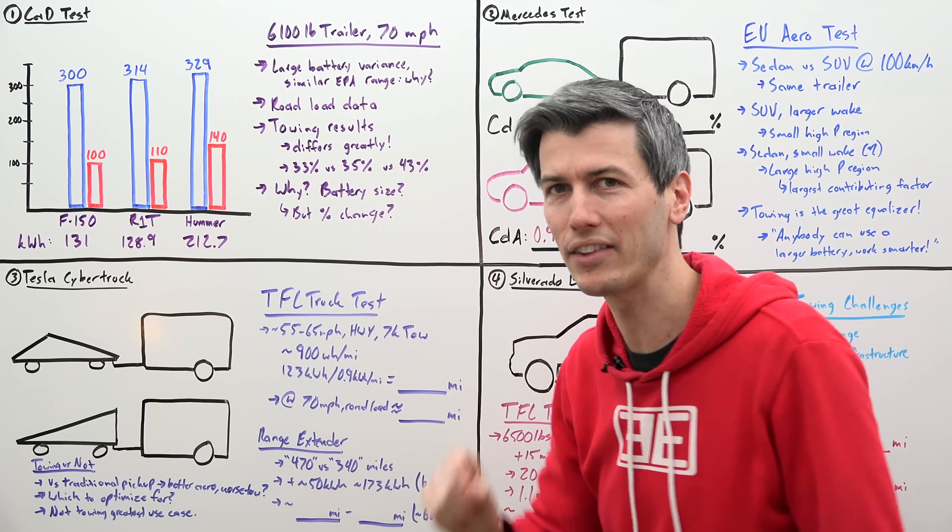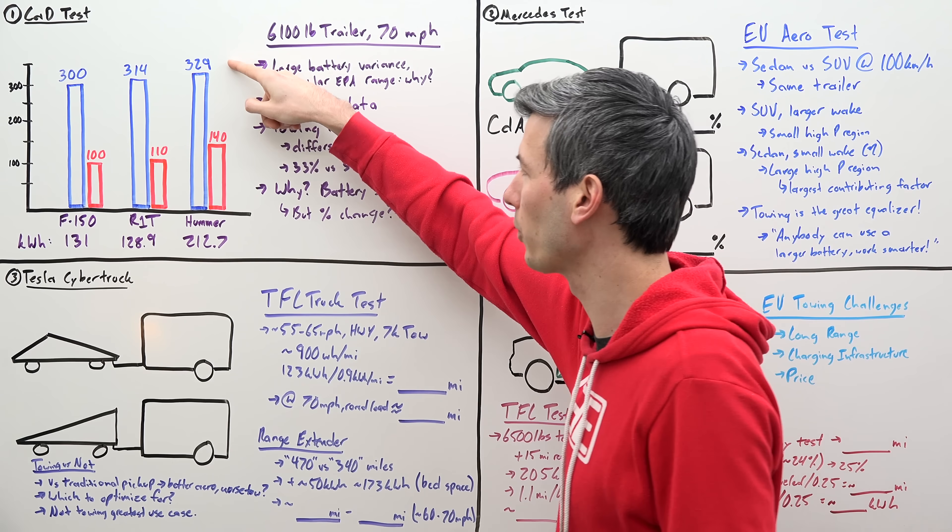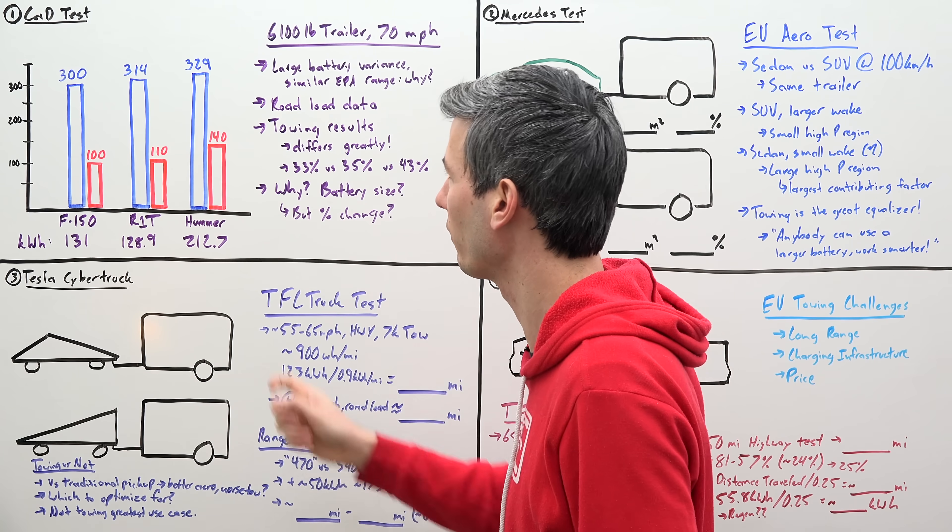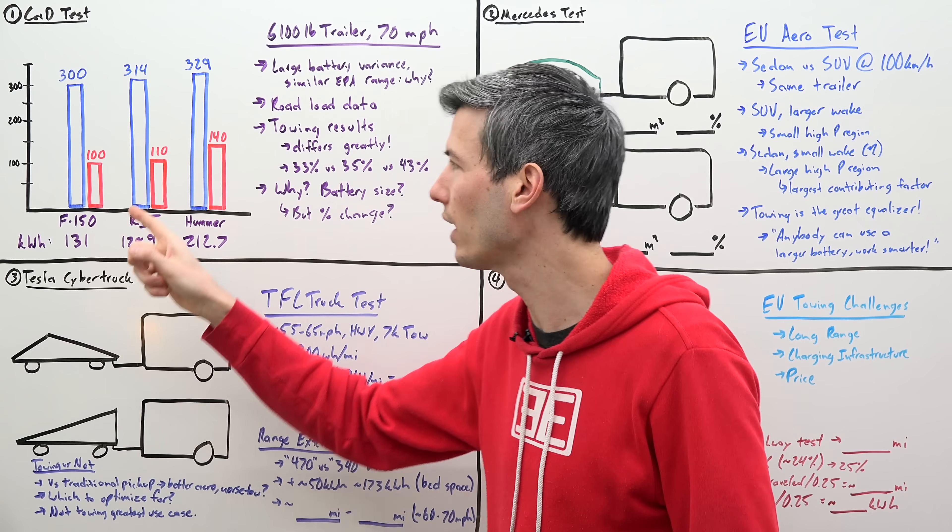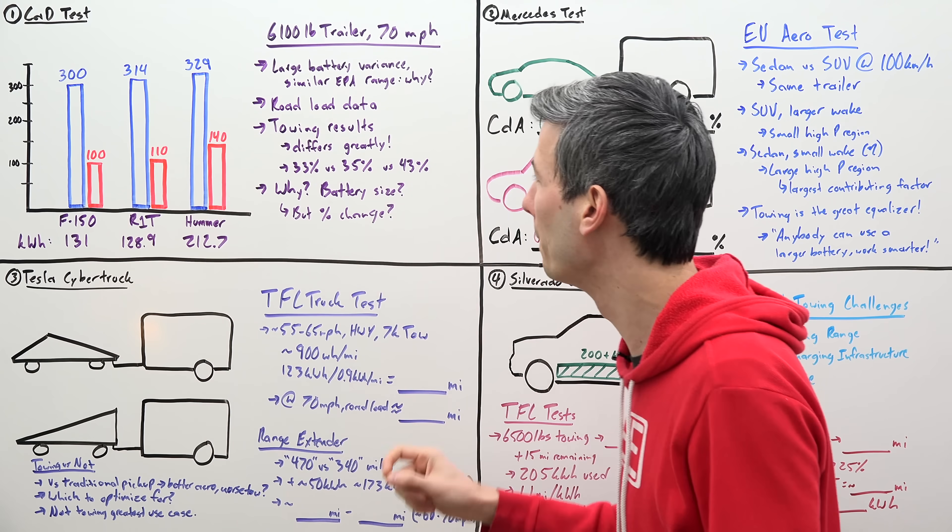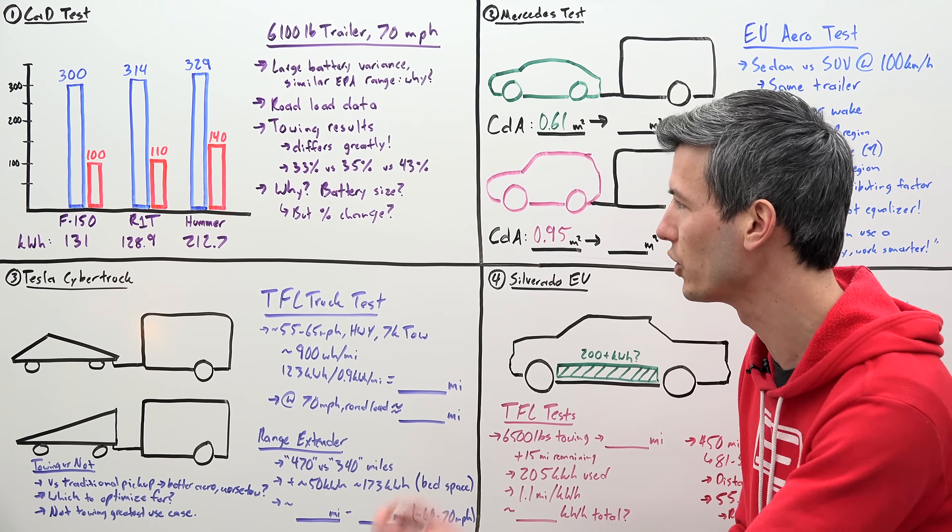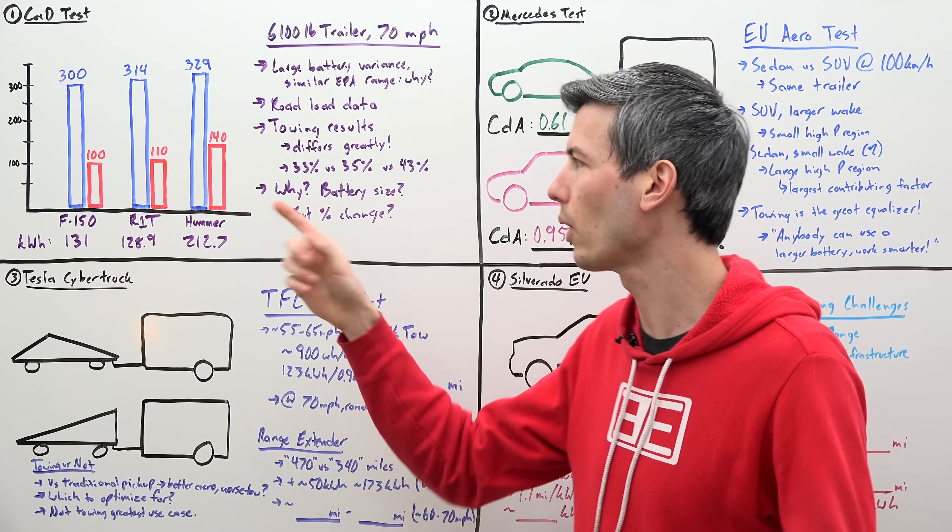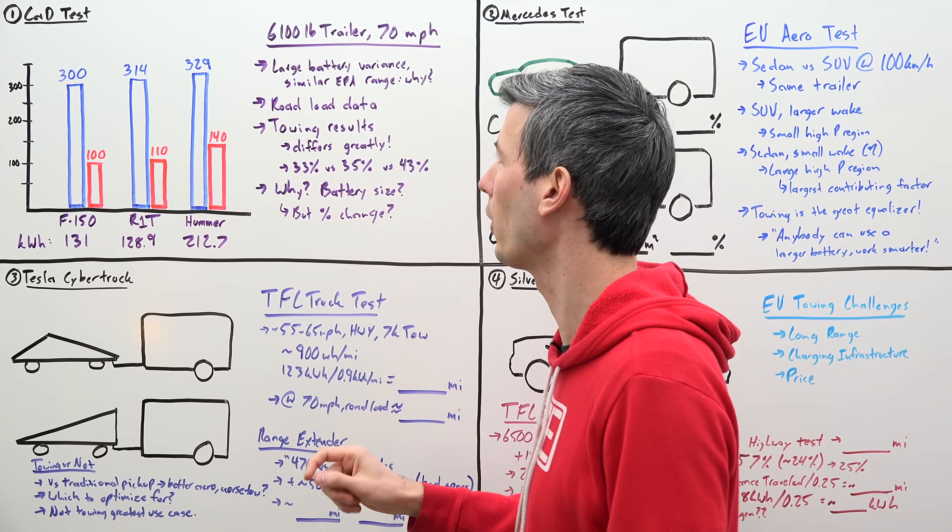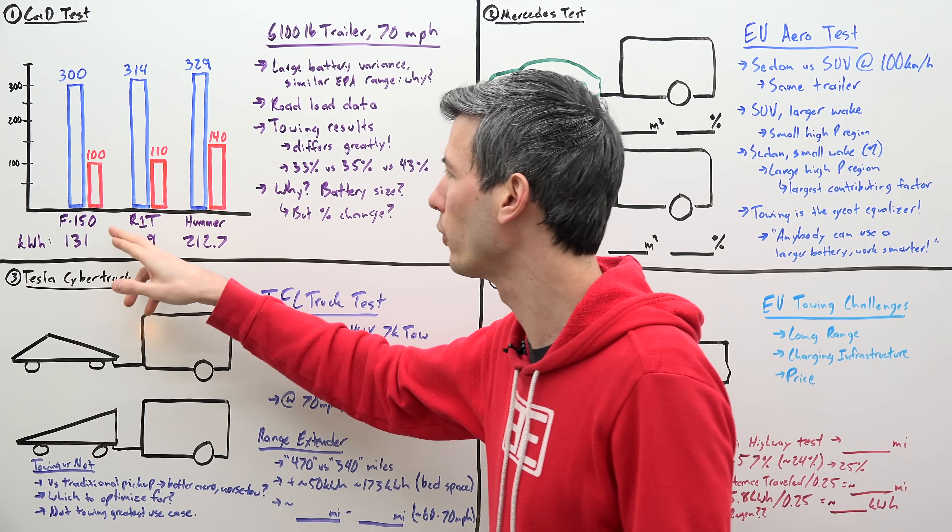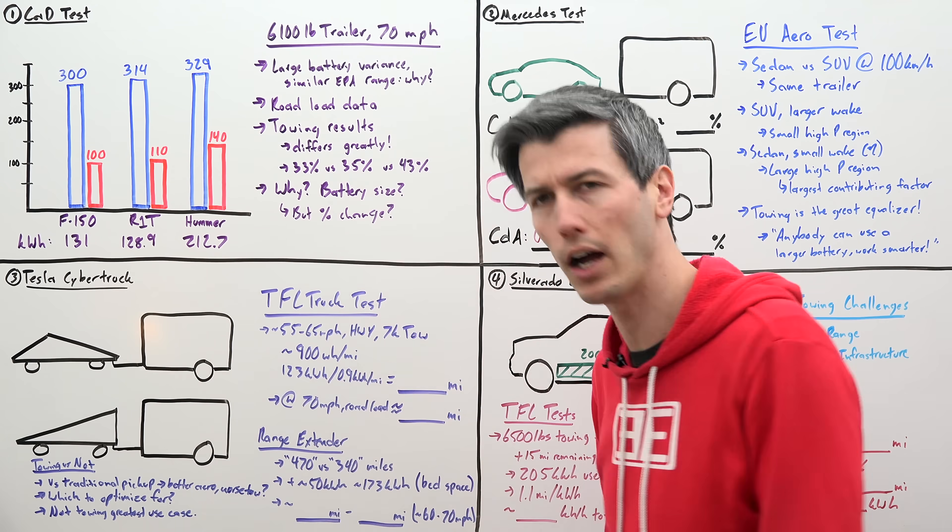But the Hummer didn't quite see that same drop. It goes from 329 down to 140 miles. And so why do we have these percentage differences where the F-150 is getting 33% of its range, but the Hummer is getting 43% of its claimed range. And the easy answer is, well, it has a larger battery, right? So it's able to tow farther. But that doesn't explain why that percentage drop is so much different for the F-150 and the Rivian versus the Hummer.